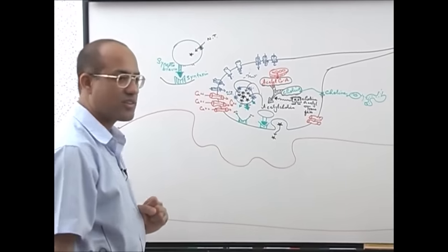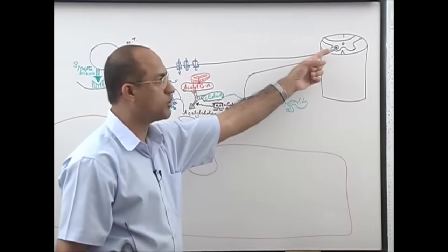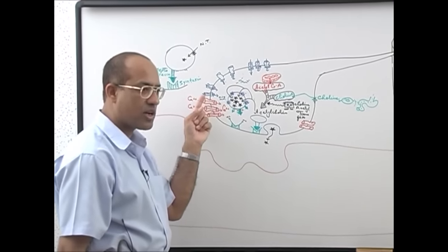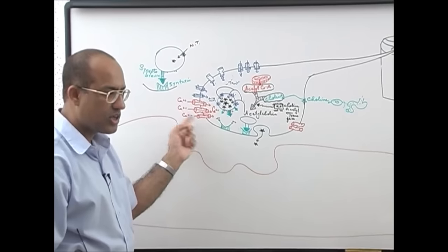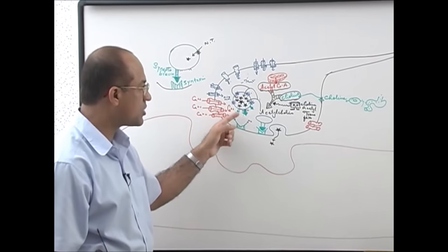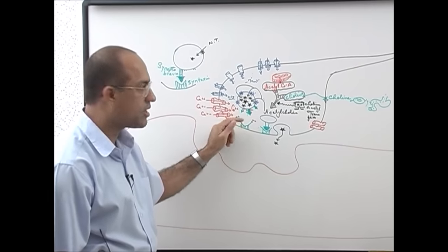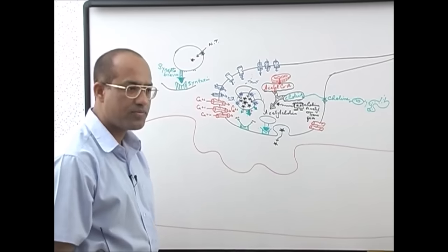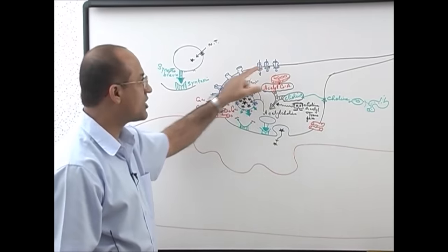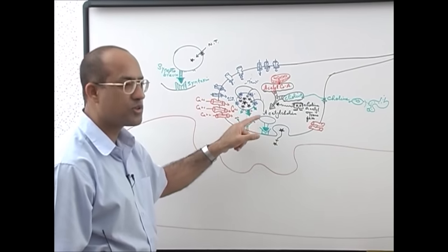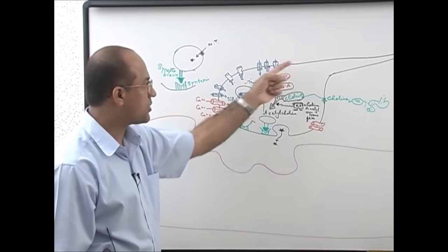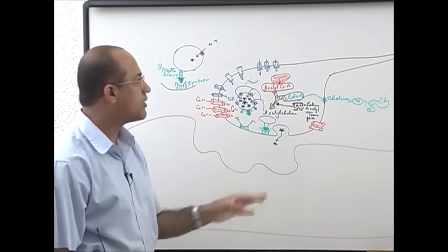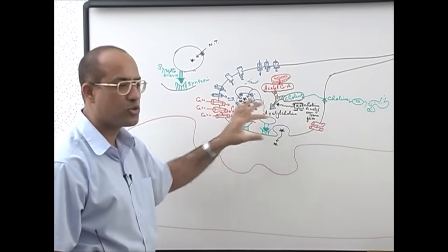To summarize the pre-synaptic events: action potentials on the motor neuron cause the wave of depolarization to rapidly approach the nerve ending; depolarization activates calcium channels; calcium influx stimulates synaptobrevin–syntaxin interaction; vesicular membrane fuses with nerve ending membrane; a hole is produced through which neurotransmitter comes out. Approaching action potential produces calcium influx, and calcium influx produces neurotransmitter release. These are all pre-synaptic events at the neuromuscular junction.